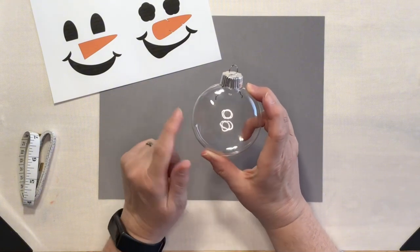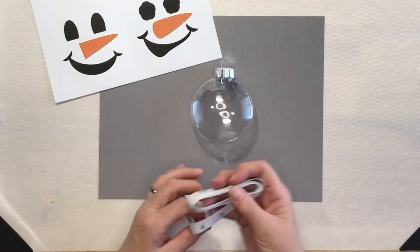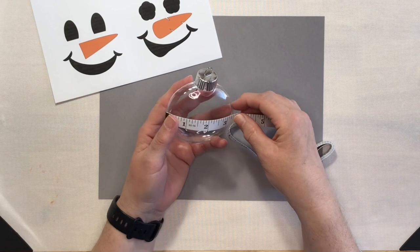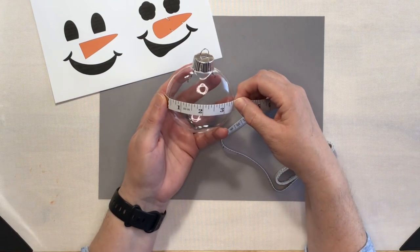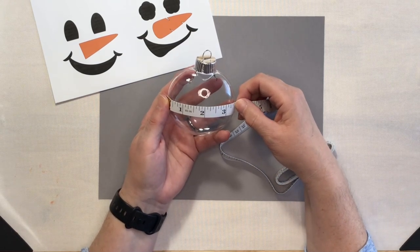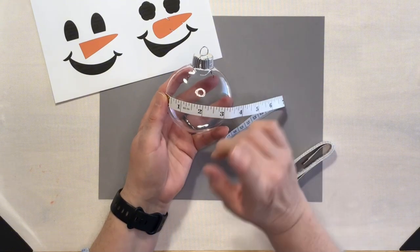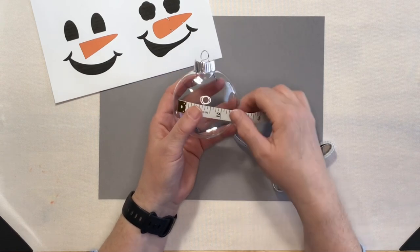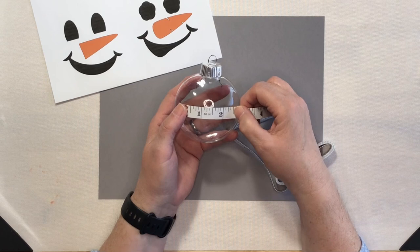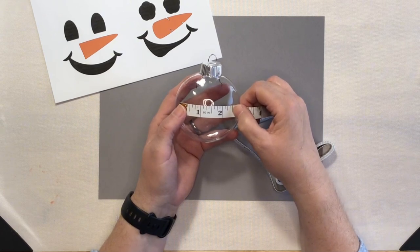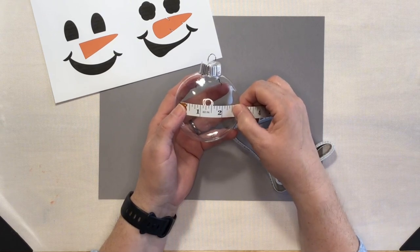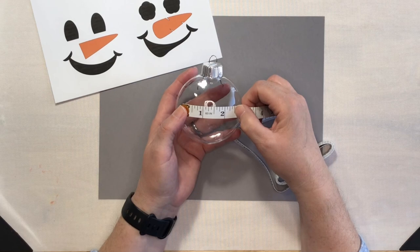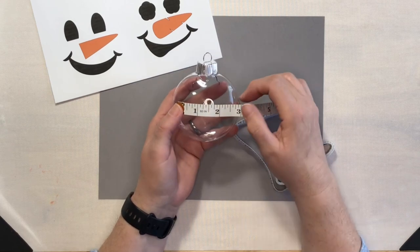So I need to know how big to make these images. Taking our handy little tape measure from side to side, the ornaments are probably about three and a half inches across. And I don't want it that big. I really just want to center the image on the front. So I think I'm going to make my snowman faces approximately two and a half inches across. I think that will be a really good size.